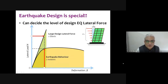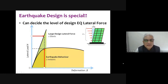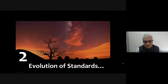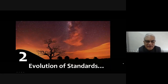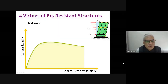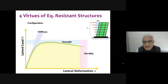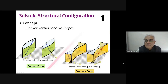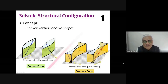In earthquake design, you can choose to allow damage or design the structure to remain elastic — the choice is in the hands of the designer, though the client will pay the higher cost if the structure must remain elastic during strong shaking. Regarding the evolution of standards: the first observation was that simple shapes are the best shapes. Simple here means convex shapes, not concave shapes. In a convex shape, any line joining two interior points remains inside the object — this line represents the flow of inertia forces from the mass to the foundation.